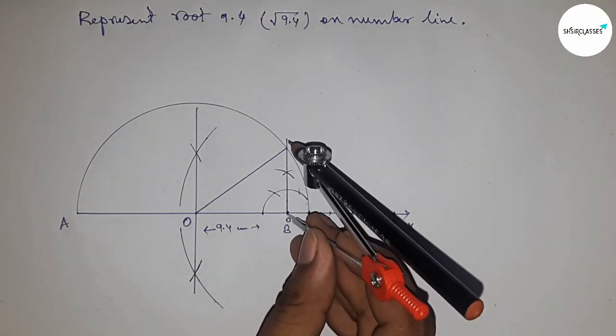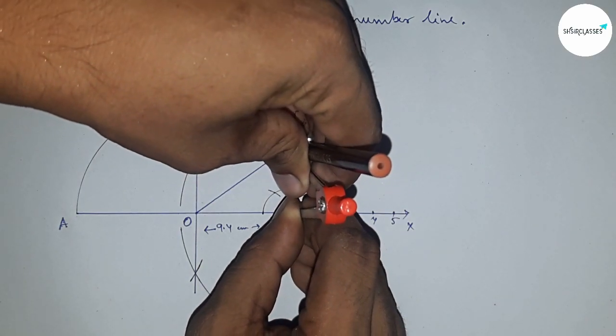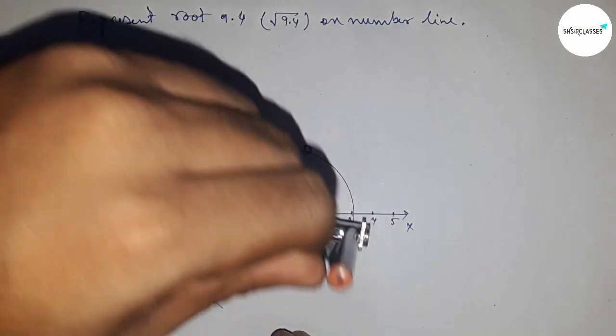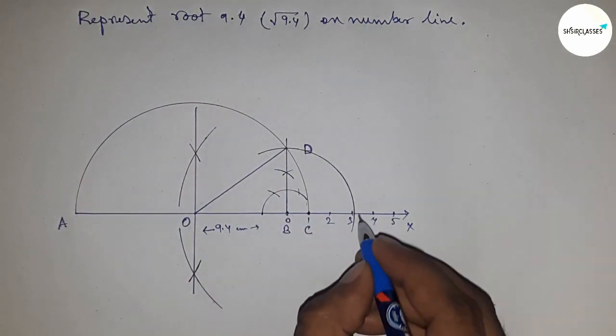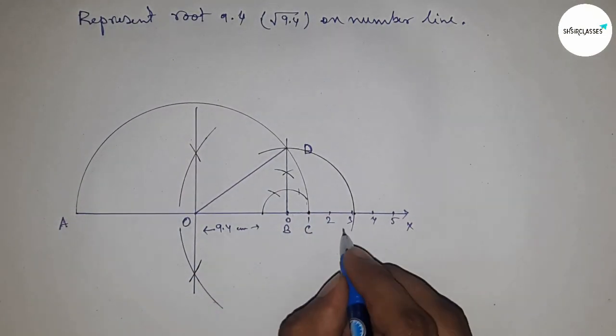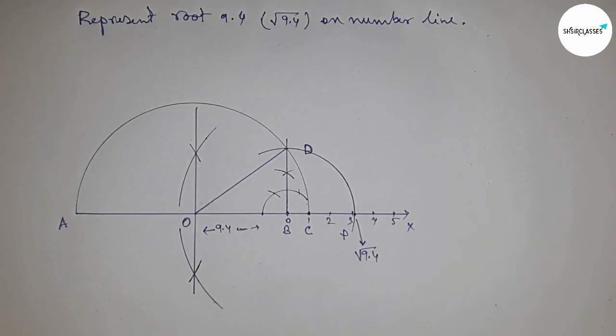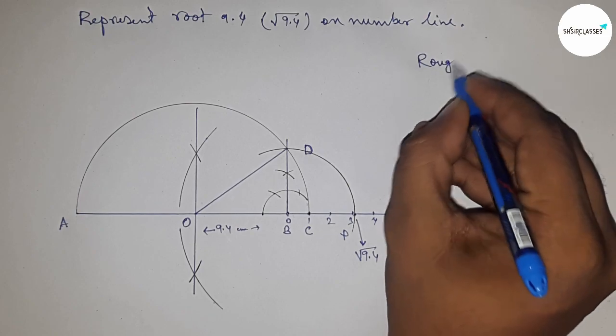Now take the length BD with a compass and draw an arc which cuts the number line at a point. This is the representation of root 9.4 on the number line.